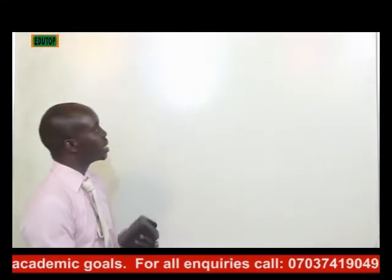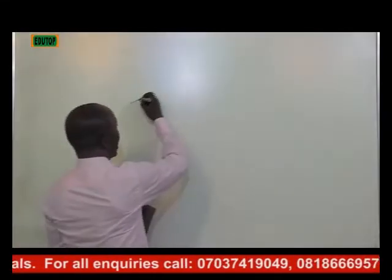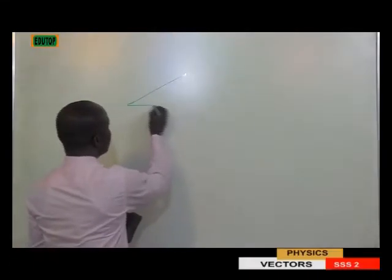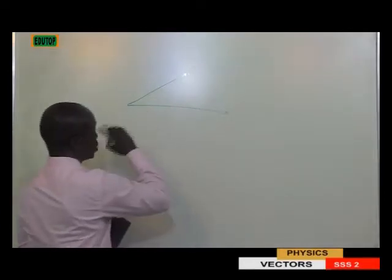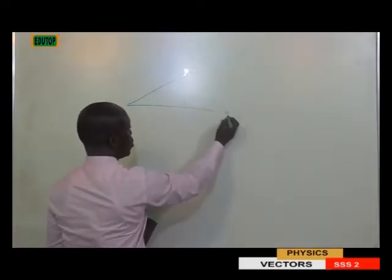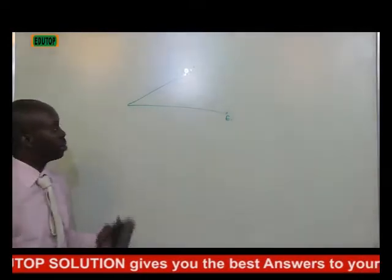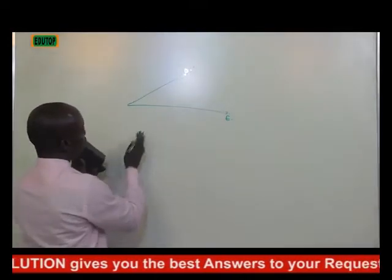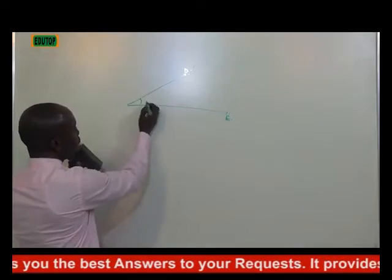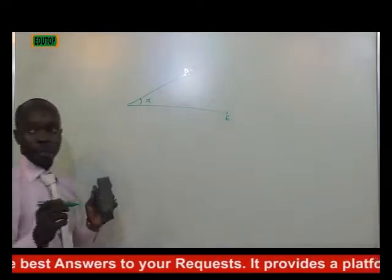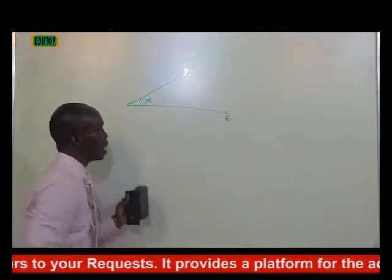For this time around, we will look at when those two vectors are at obtuse angles towards each other. This is the vector D and this is the vector E. What do I mean? The direction of movement, yes, they are adjacent to each other. Now they have an angle here, let's say this is α.